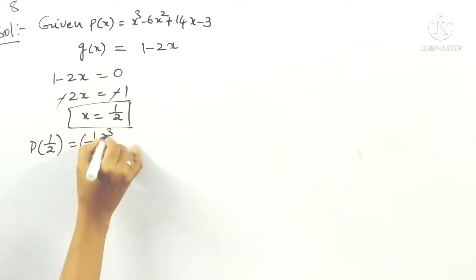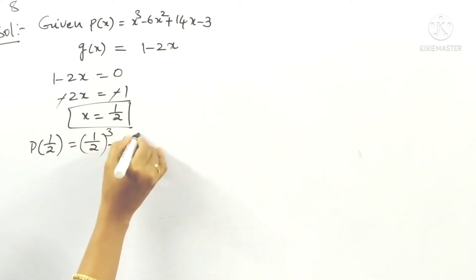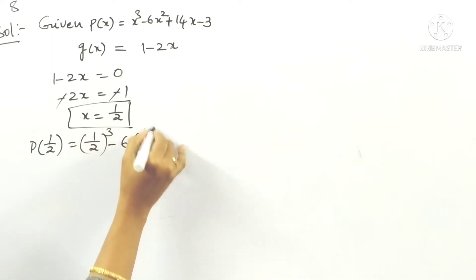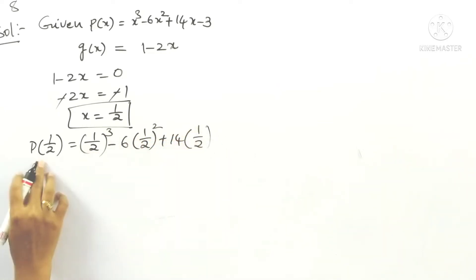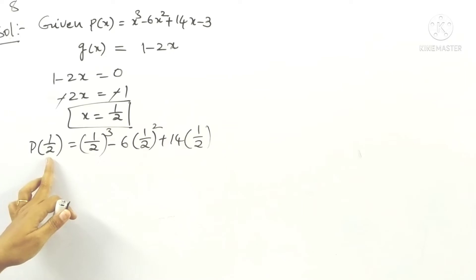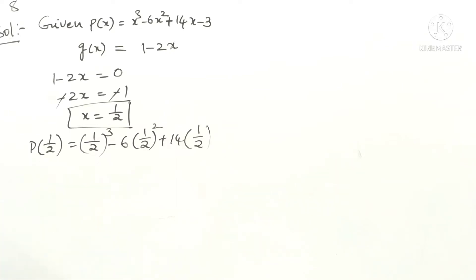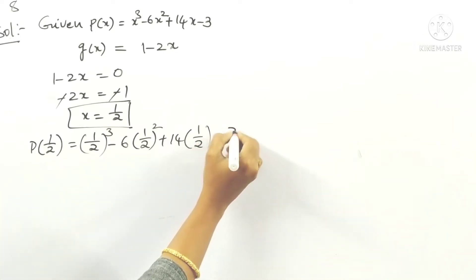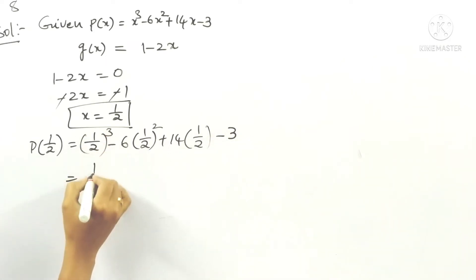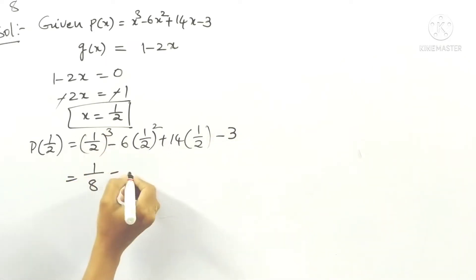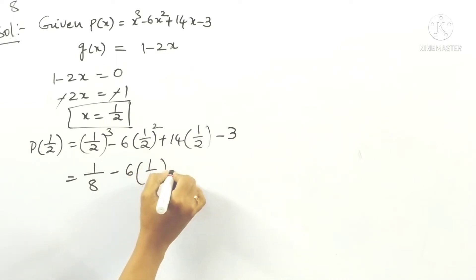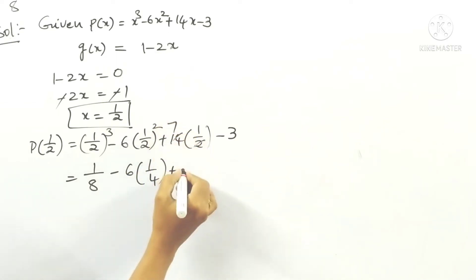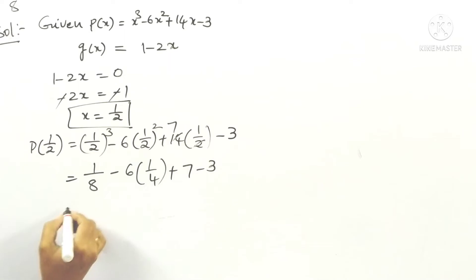Substituting x = 1/2 into p(x): (1/2)³ minus 6 times (1/2)² plus 2 times (1/2) minus 7. That gives 1 by 8, minus 6 into 1 by 4, plus 2 ones, and 2 sevens minus 7.